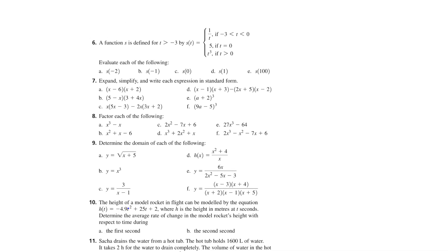Question 6: The function s is defined for t greater than negative 3 by: s(t) equals 1/t if t is between negative 3 and 0; 5 when t is 0; and t³ if t is greater than 0. It's a piecewise function. The domain is t greater than negative 3, t is the independent variable and s is the dependent variable. For part A: s(negative 2) — since negative 2 is between negative 3 and 0, we use 1/t, and the answer is negative 1/2. For part C: s(0) is given directly as 5, so s(0) equals 5.